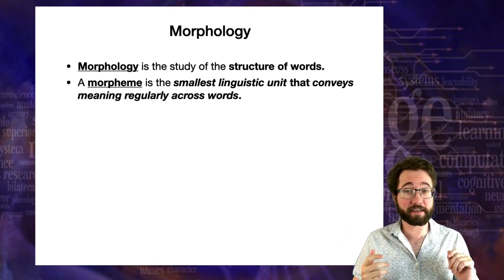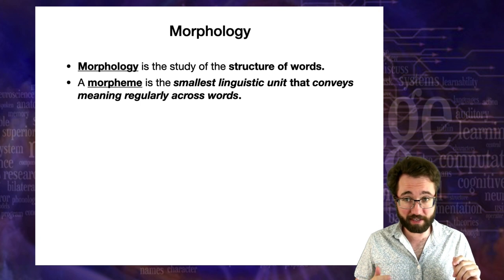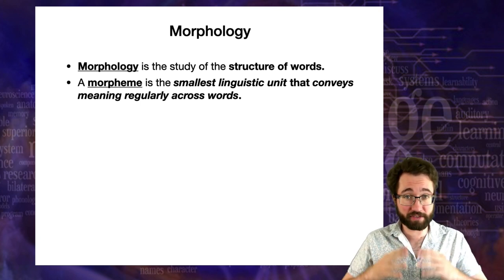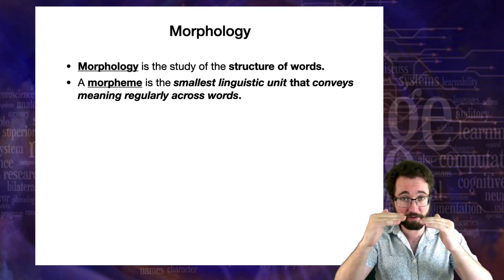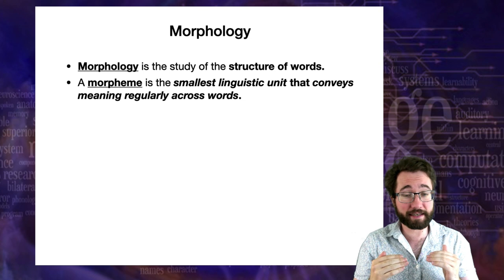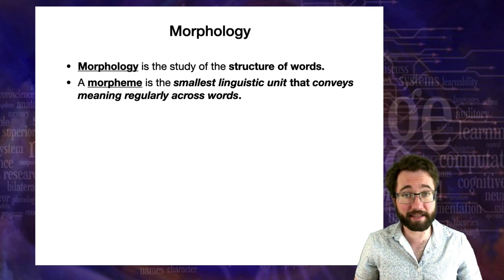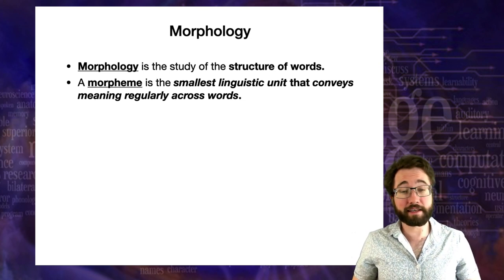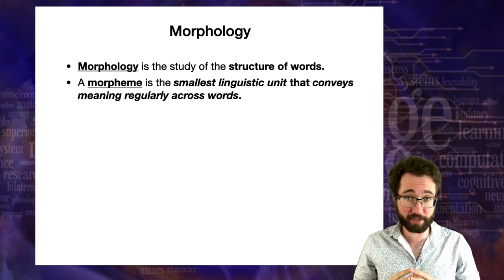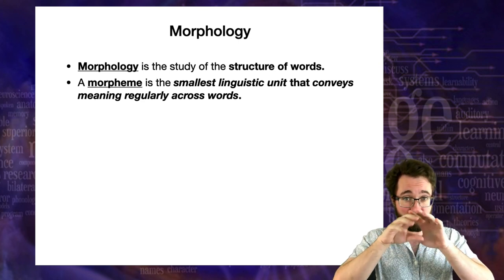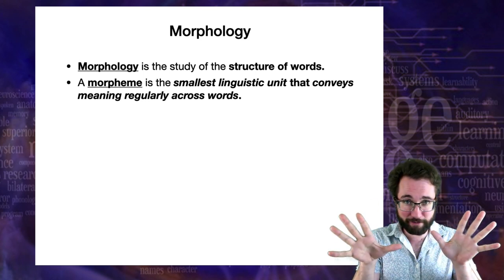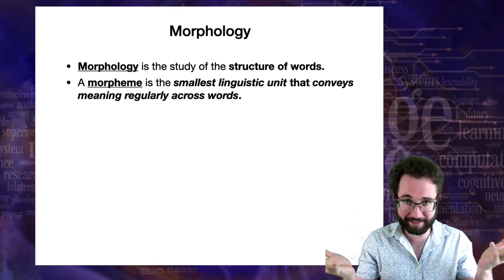This definition has two important parts. One is that it conveys meaning regularly — you see the same morpheme in lots of different words, and each of those words has some common element of meaning corresponding to that morpheme. The second part is that it's the smallest unit with that property. If you break a morpheme into parts, you get meaningless strings of phonemes.